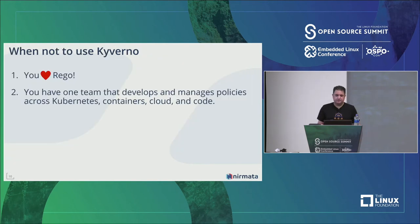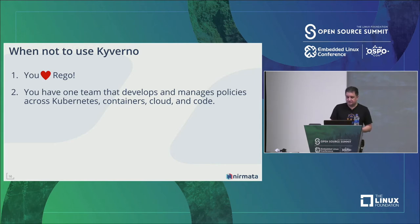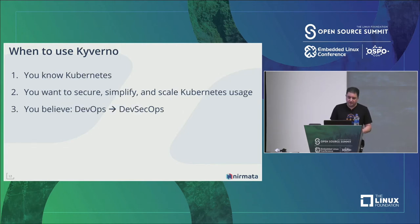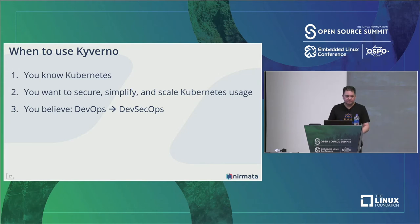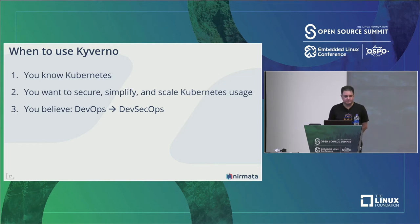If your teams are familiar with Rego and have developed expertise, OPA and Gatekeeper are great solutions — and if you want to manage policies across different systems beyond Kubernetes, OPA works well there too. But if you're focused purely on Kubernetes and trying to evolve from DevOps to DevSecOps, Kyverno is much easier to adopt across all roles and scales better as your teams and Kubernetes usage grow.